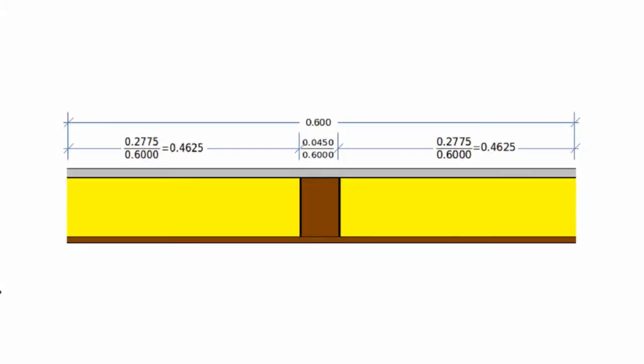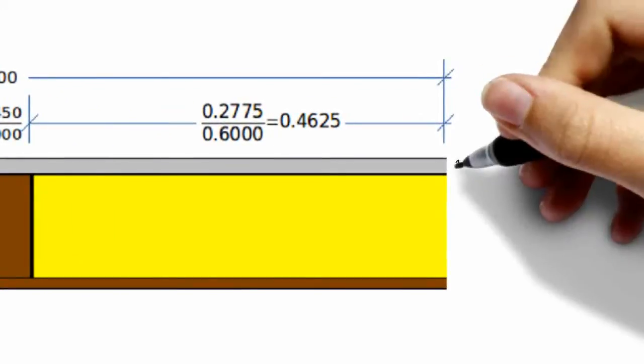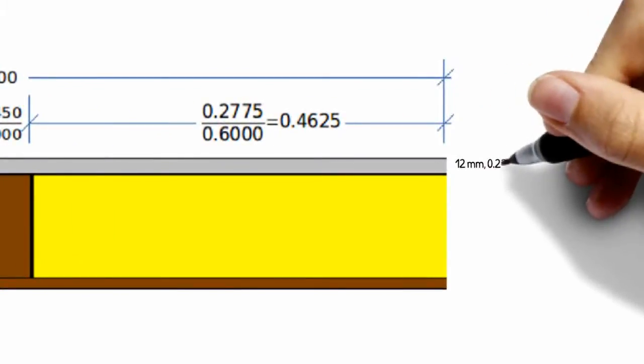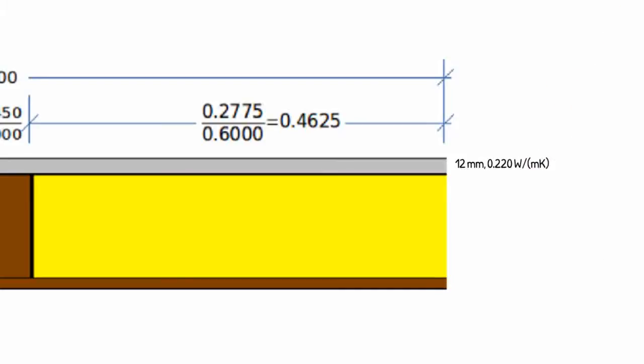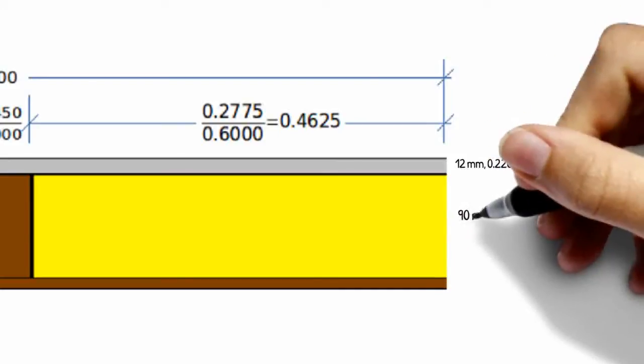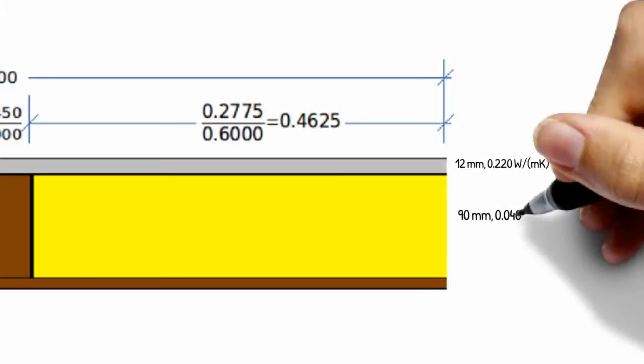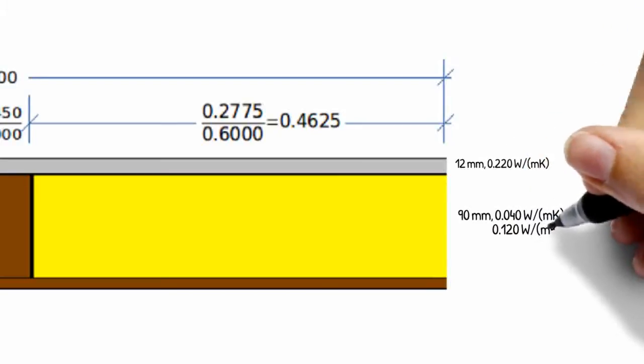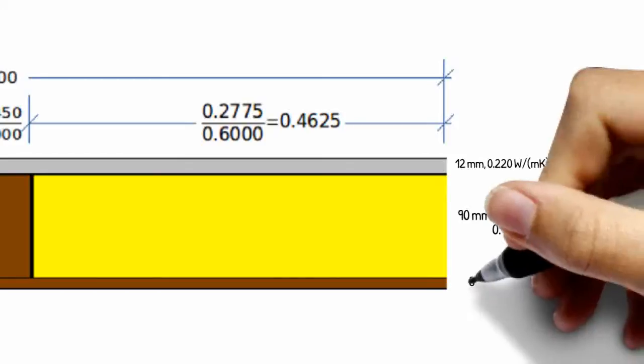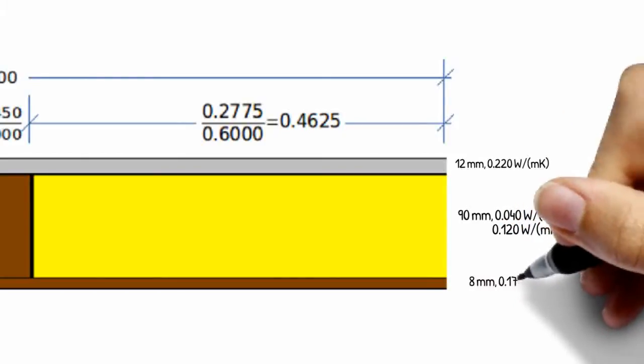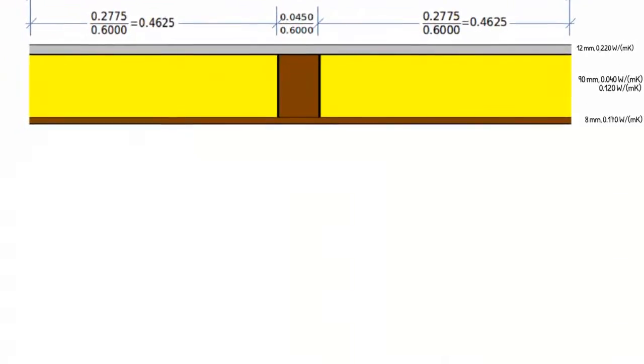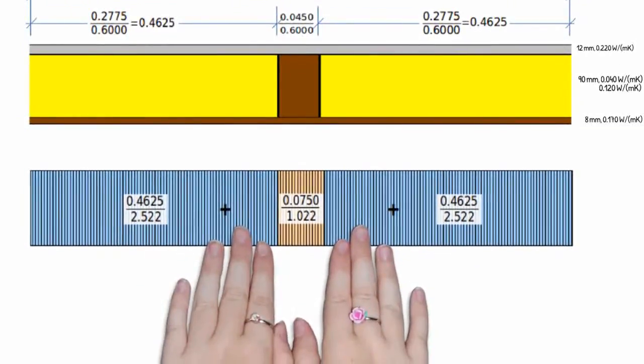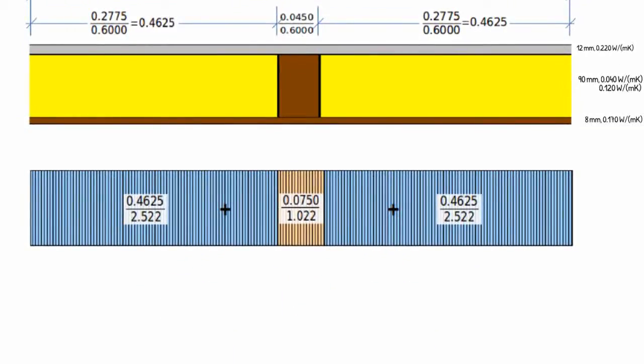Let's assume the timber wall we're interested in has a timber stud at 60 centimeter centers. Here's our plasterboard and its thermal conductivity, then the insulation and the thermal conductivity, and in the same layer the softwood stud and its thermal conductivity. Let's assume we have a plywood rigid air barrier on the outside, 8 millimeters, thermal conductivity 0.170 watt per meter kelvin.